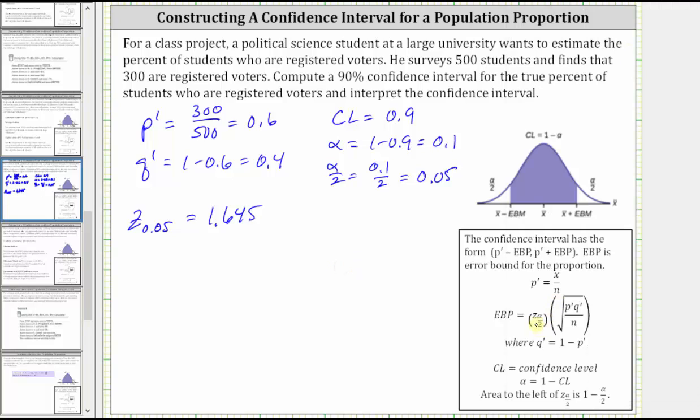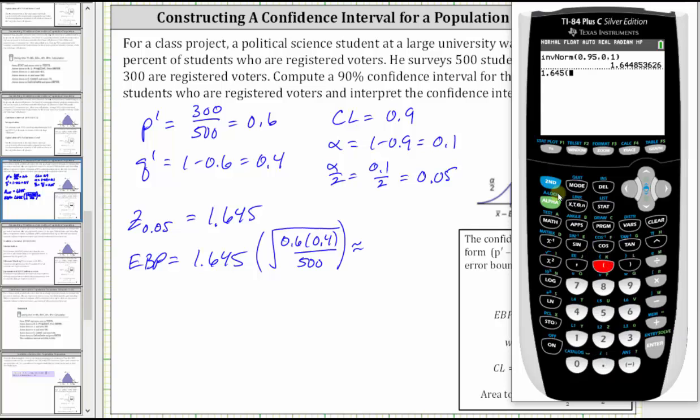And now we can find the error bound, and then find the confidence interval. The error bound for the proportion is equal to the z-score we just found of 1.645 times the sample standard deviation for the proportion, which is equal to the square root of p-prime times q-prime divided by n, which in our case is 0.6 times 0.4 divided by 500. The error bound or margin of error to three decimal places is 0.036.